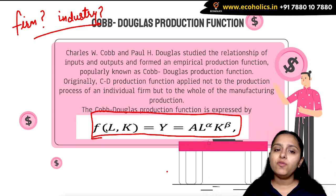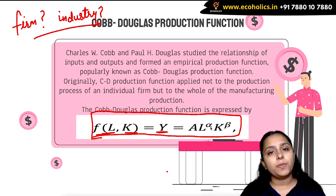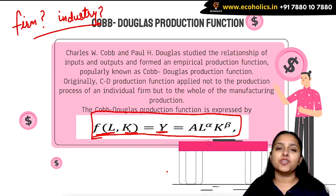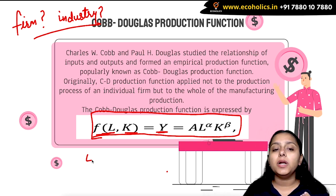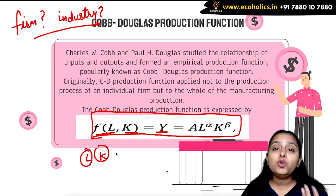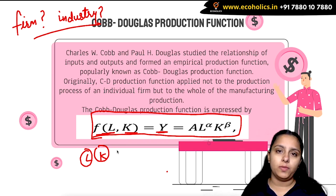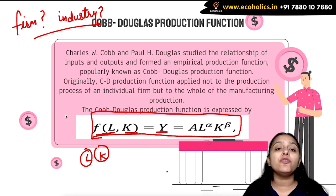The Cobb-Douglas production function looks like: Q = f(L, K) = A · L^α · K^β. One very important property of the Cobb-Douglas production function is that because labor and capital come in multiplicative form, both of them have to be non-zero. If either one becomes zero, the output will become zero. So both labor and capital must be positive — you cannot miss out one input in the Cobb-Douglas production function.